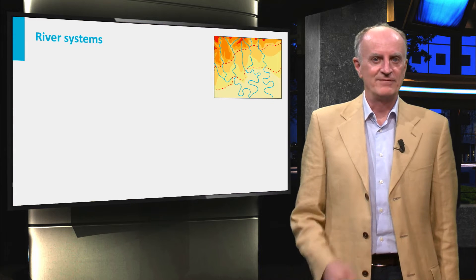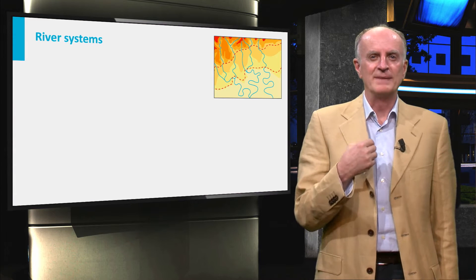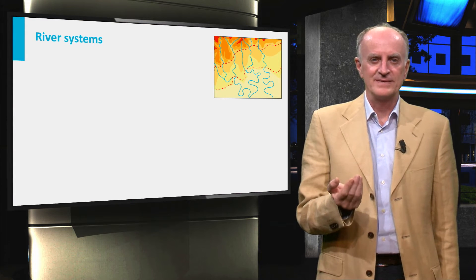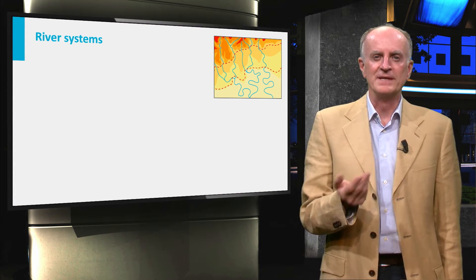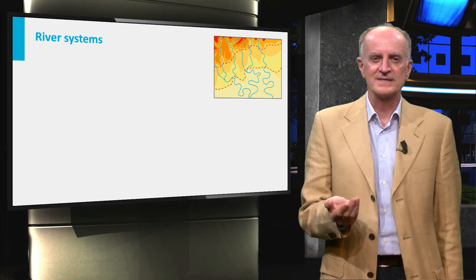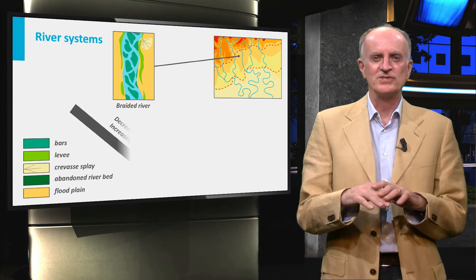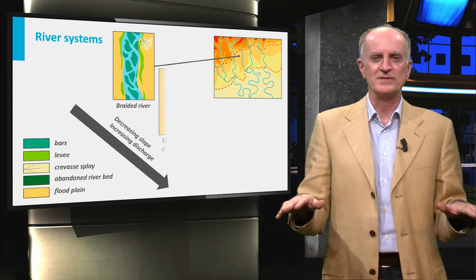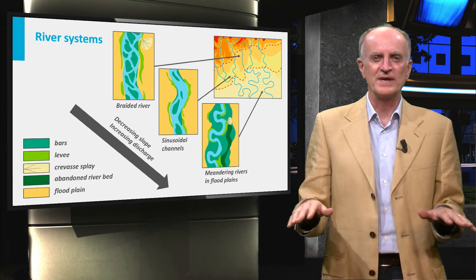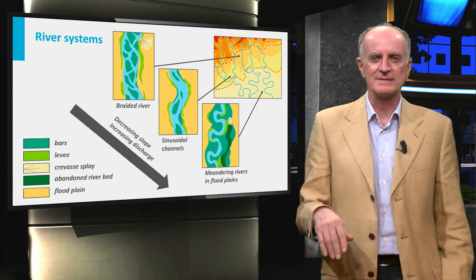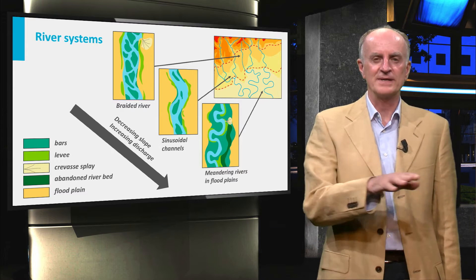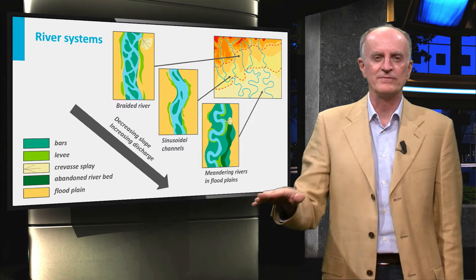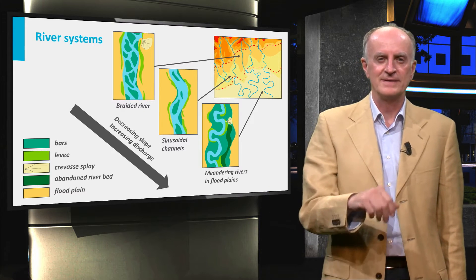Having left the steep mountain valleys and having dumped sediments in building an alluvial fan, rivers enter now gently sloping regions forming braided river systems and eventually start meandering in large alluvial plains.